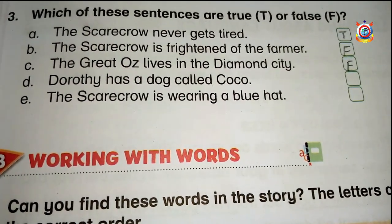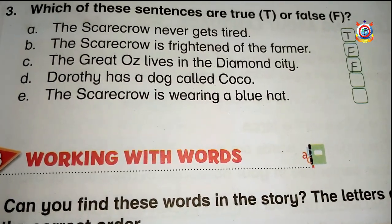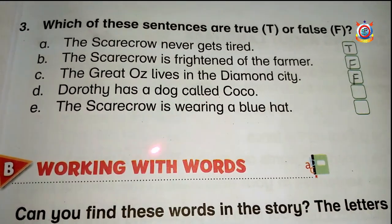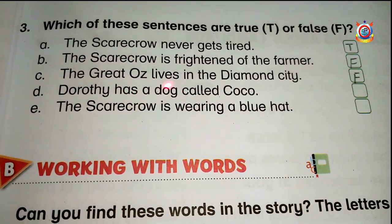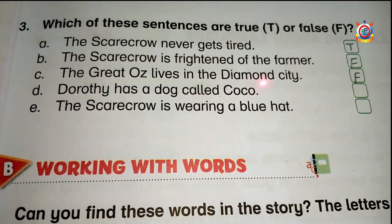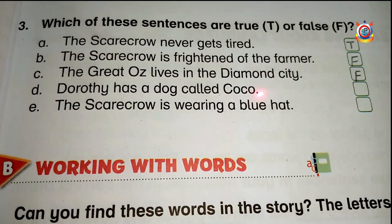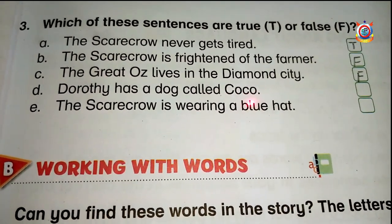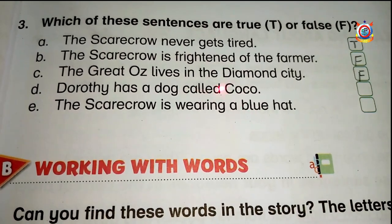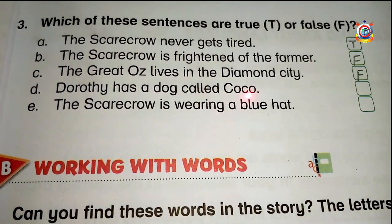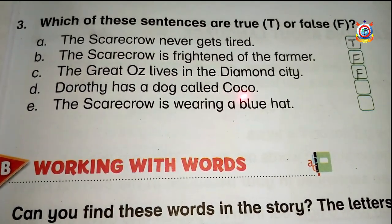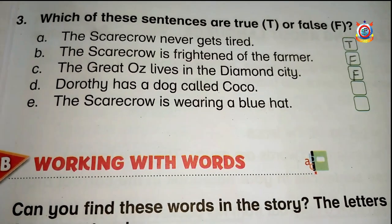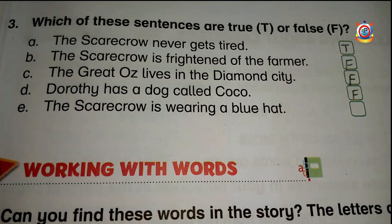The next sentence is: Dorothy has a dog called Coco. What was the dog's name? Very good — its name was Toto, but they say its name was Coco, so what would we write here? Very good — we will write F here.